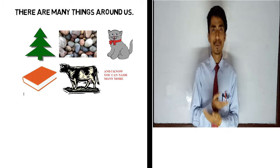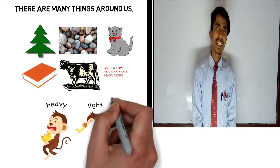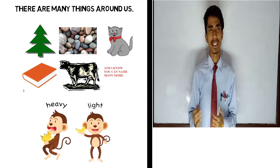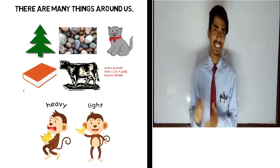We can see different types of things around us. Some of them are light. Some have different shape and size.